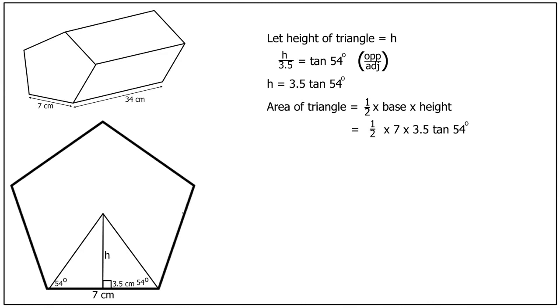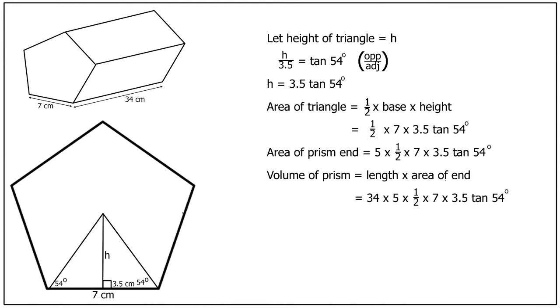Now that's the hard part done already. We now multiply by 5 to get the area at the end, the cross section. Area of end equals 5 times a half times 7 times 3.5 tan 54 degrees. And then the volume is the length of the prism multiplied by the area of the end. That's equal to 34 times 5 times a half times 7 times 3.5 tan 54 degrees. And multiplying all that out on our calculators gives 2866.31 cubic centimetres.